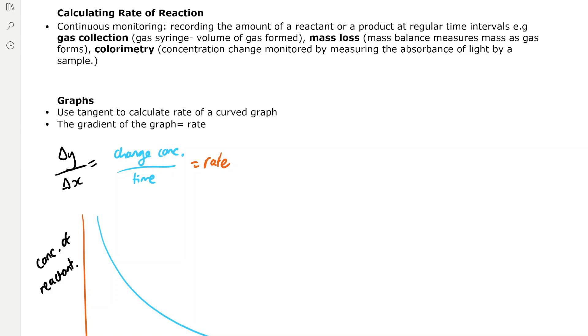Gas collection, using the gas syringe, and we measure the volume of gas formed. Mass loss, where we use a mass balance to measure the mass as the gas forms, so as a gas evolves, it leaves the reaction mixture and that decreases the mass. And then we have colorimetry as well, which is where the concentration change is monitored by measuring the absorbance of light by a sample.